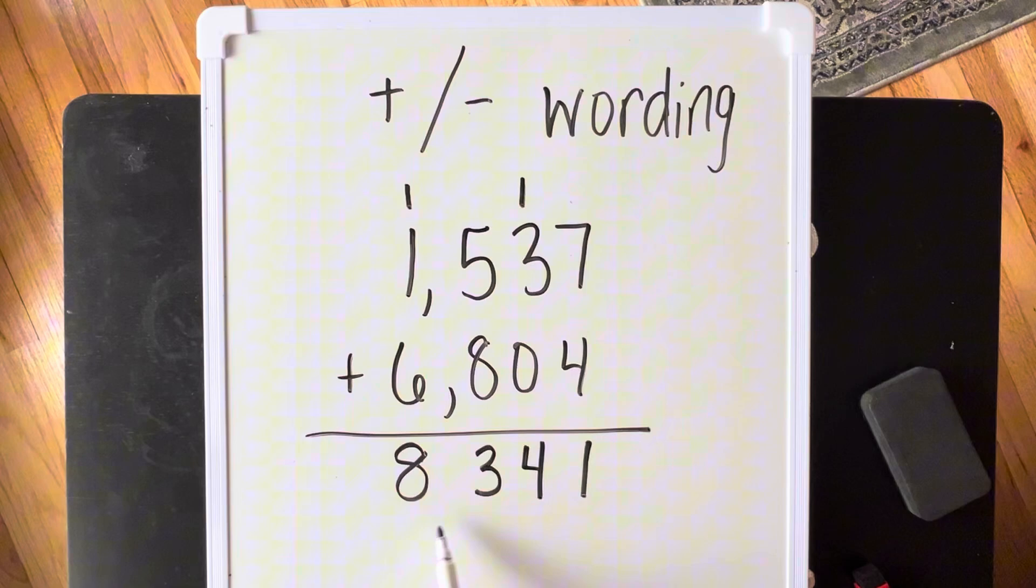Remember, if you don't have a comma in a big number, it's incorrect. It's not a true number. We can go 1, 2, 3 place values and stick our comma.